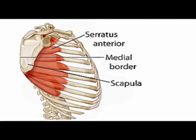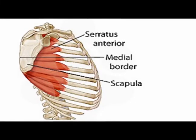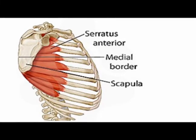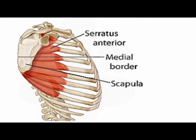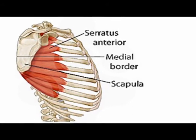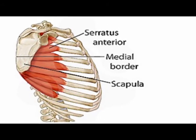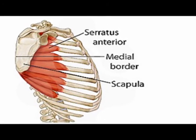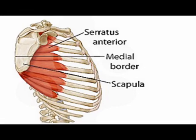Upward rotation of the scapula is caused by a concentric action of the upper trapezius and the serratus anterior muscles.